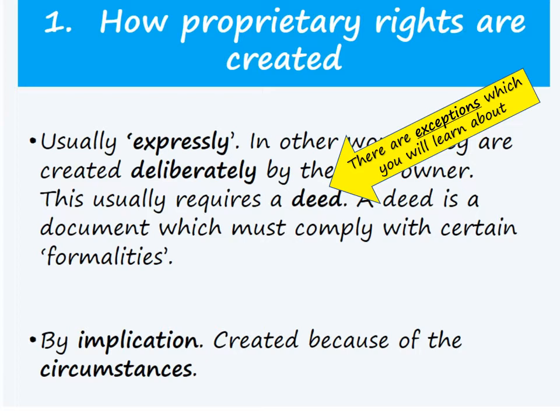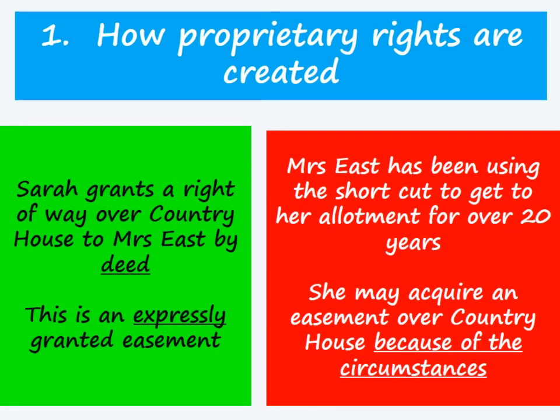Looking at some examples: the usual method of granting a right-of-way, which is an easement, is by deed — the landowner will execute a deed creating a right-of-way over their land. But the law also recognises situations where an easement can arise without the need for a deed. One method is by long use. As you will discover when you study easements in more detail, if somebody has been using the land for at least 20 years, then they can acquire an easement because of that long use.